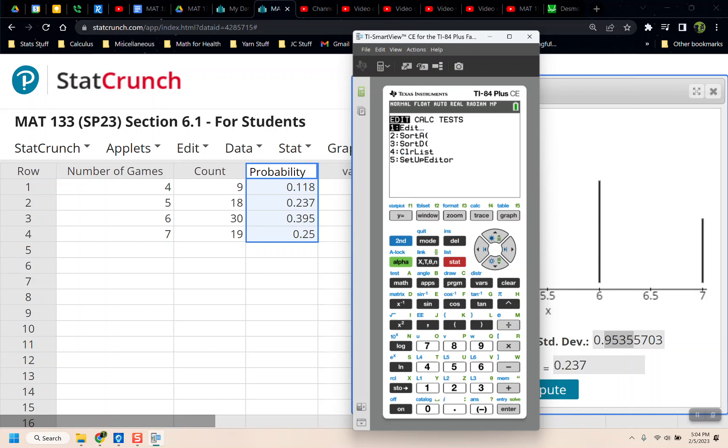And then you go to Stat, Calculate, one variable, and you have to tell it to use the frequency list. That's the key to this section. It's like Section 3.3. So you have to tell it, List 1 has the data, List 2 has the frequencies. And you go down to Calculate and press Enter.